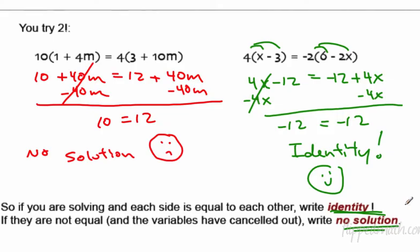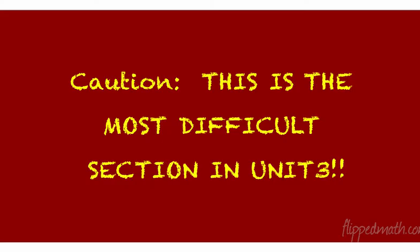That is Section 3.4. I am warning you — this is the most difficult section in Unit 3, so you have a lot of practice to do. Do the corrective assignment if you need it. History shows this is a tough section. This is Mr. Baumholder. Remember: it's nice to be important, but it's more important to be nice. See you.